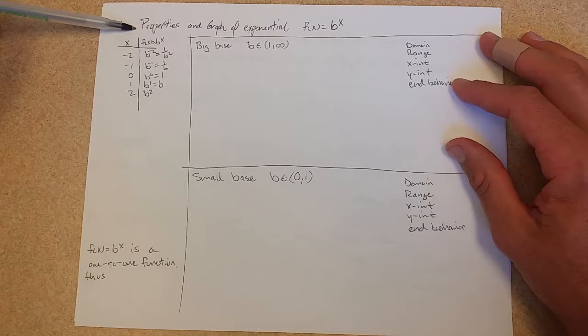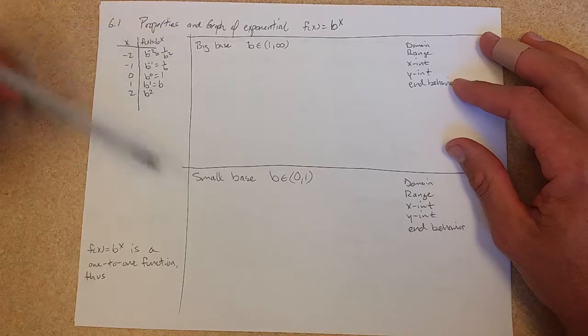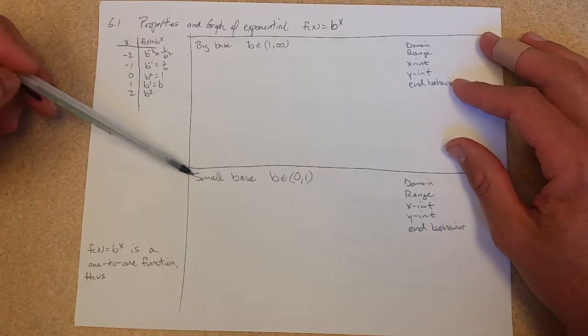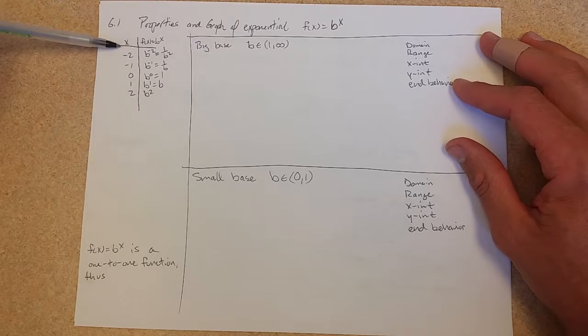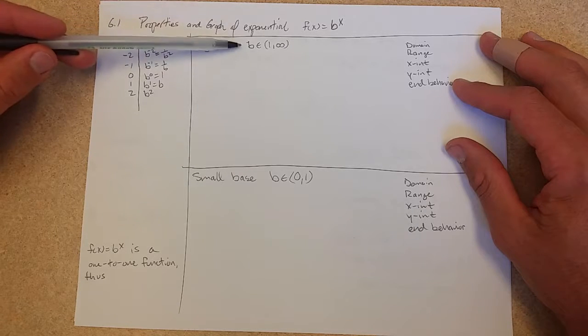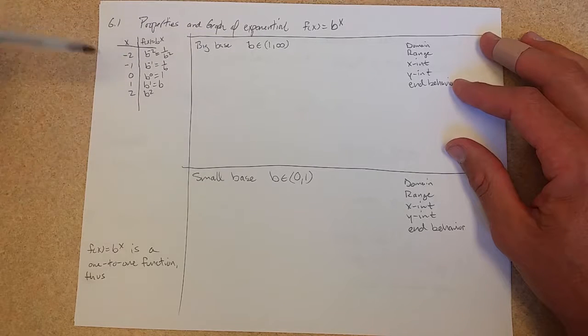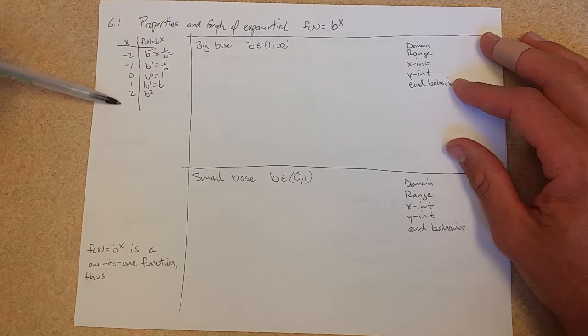Now we're going to graph an exponential function, and big bases look different than little bases or small bases. Either way, regardless of if b is bigger than 1 or between 0 and 1, you can have the same table of values.